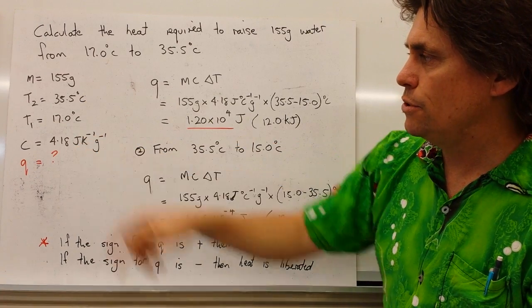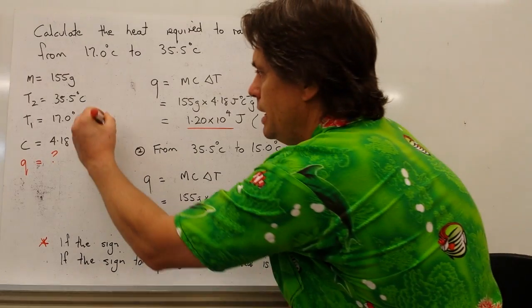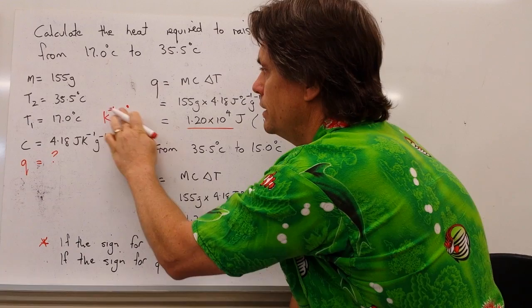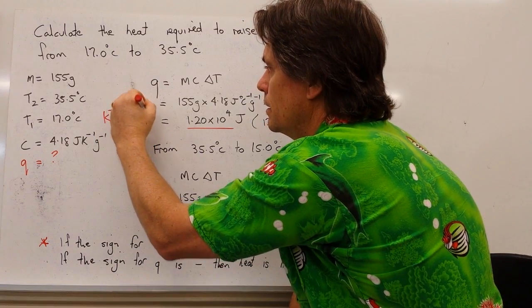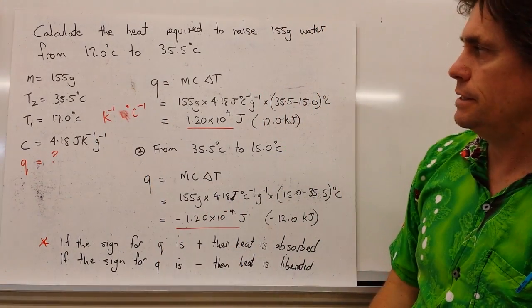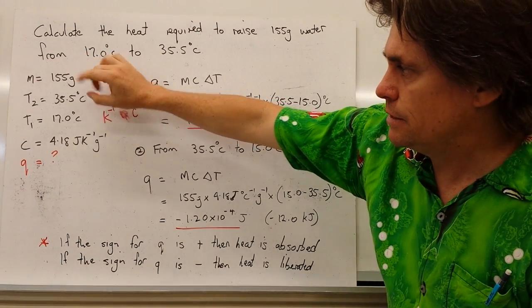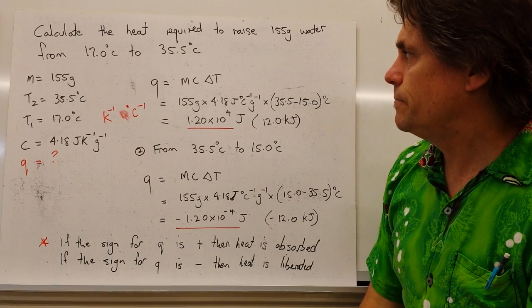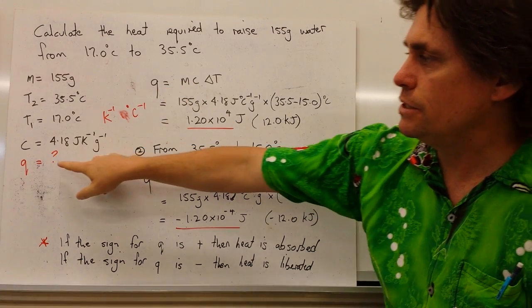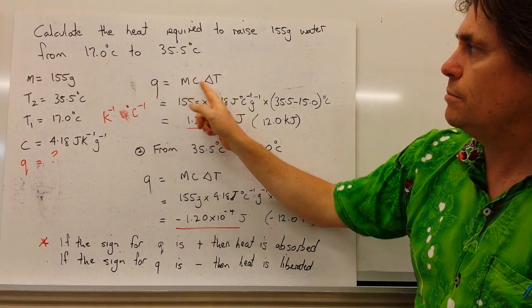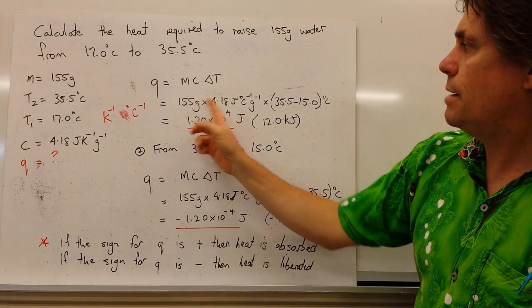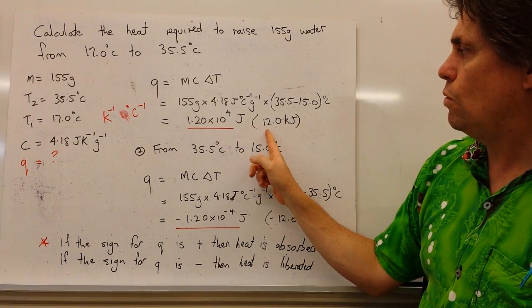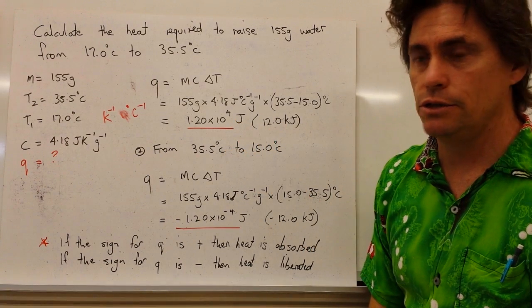Now the per kelvin is used interchangeably with per degree Celsius. We've got this measured in Celsius, so we can actually change that to per Celsius as well. So we get our unknown as Q, so we want to calculate Q is equal to MC delta T. We put our numbers in, and we come out with a value of 1.2 by 10 to the fourth joules, or 12.0 kilojoules.